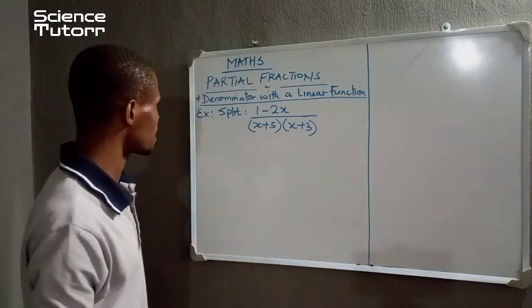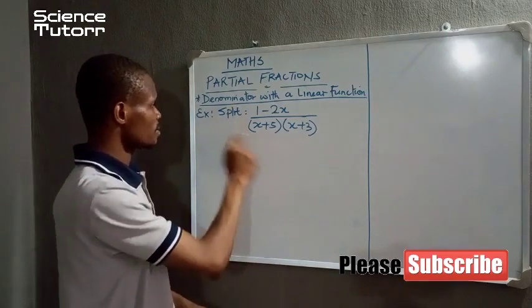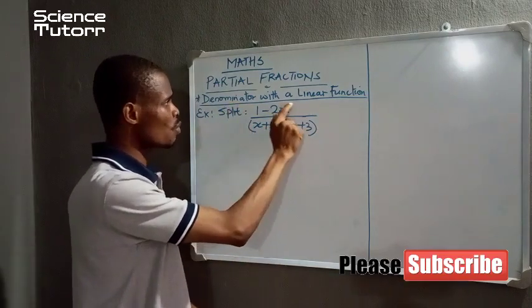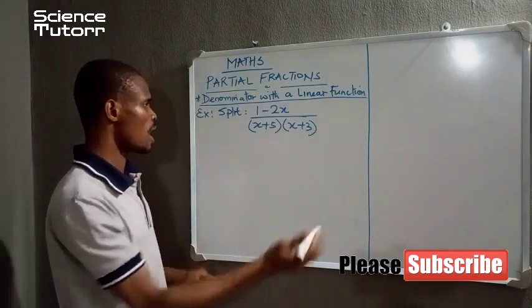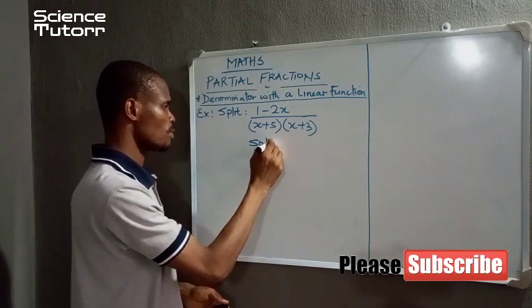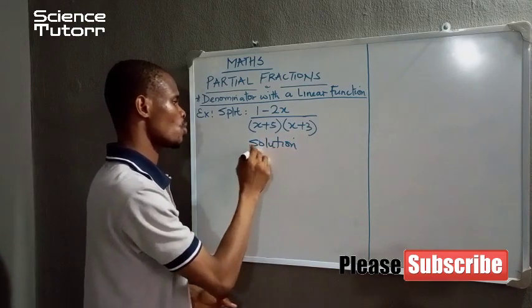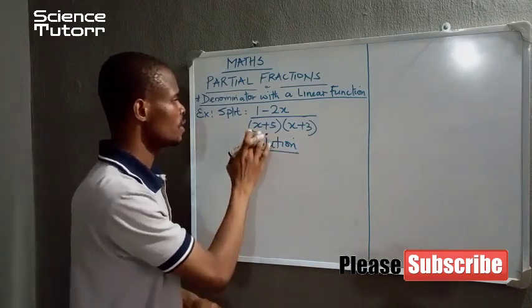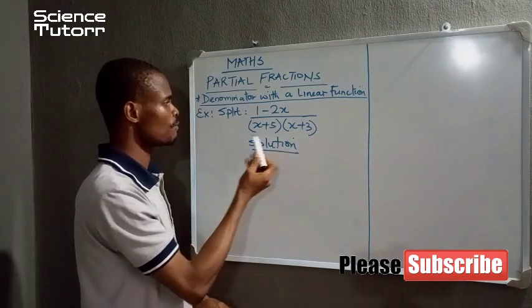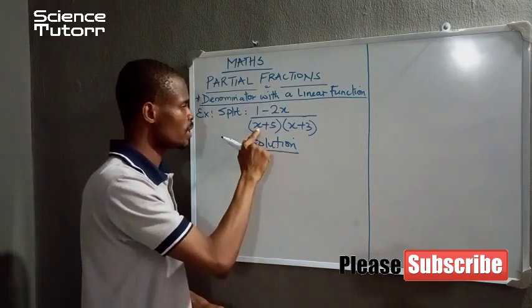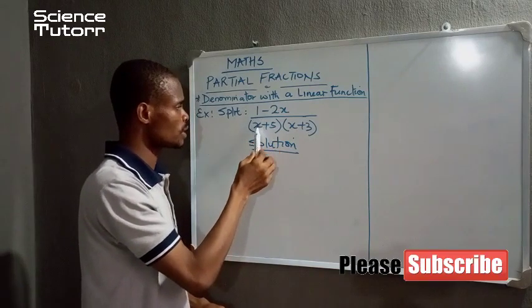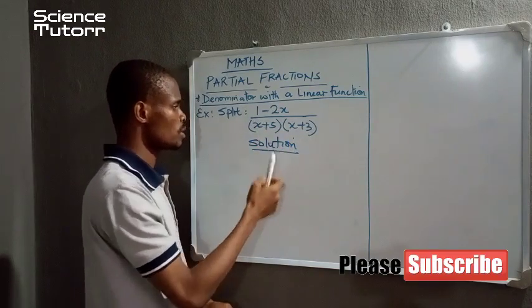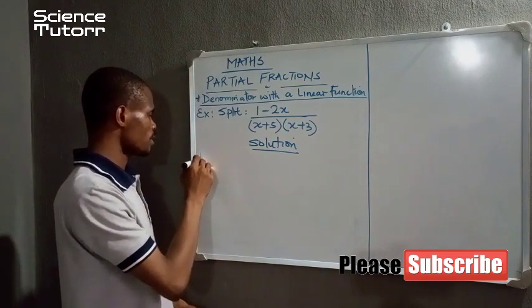So we shall begin with an example via a method denominator with a linear function. And we have an example on the board. How do we solve such a problem? When the denominators are having linear function, such as when the unknown is raised to power 1, that is the value of x is raised to power 1, we have a linear function.